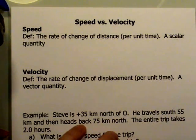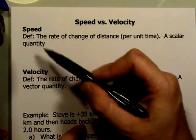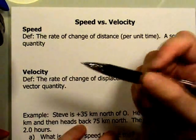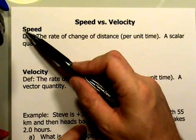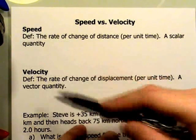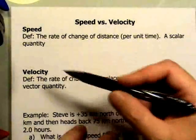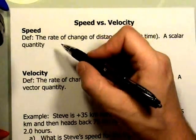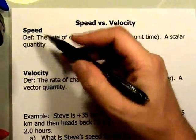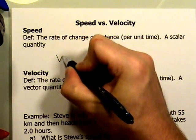Now the letter that we choose for speed and for velocity is the same letter. I hope you recognize we can't use the letter S because we've already used the letter S to represent the distance. So we cannot use the letter S to also represent the speed. So what we do is we use the same letter for both speed and velocity and that is the letter V.